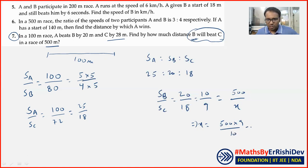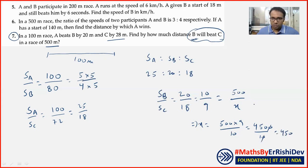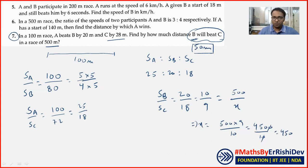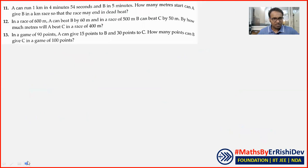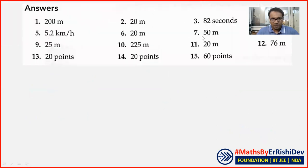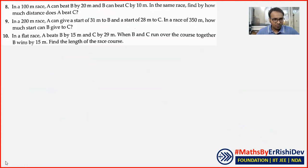x = 500 × 9/10 = 4500/10 = 450۔ یعنی جتنے دیر میں B 500 میٹر بھاگتا ہے، C صرف 450 میٹر بھاگتا ہے — 50 میٹر کم۔ B has won by 50 metres. Check کرتے ہیں — question 7 کا 50 metres ہونا چاہیے — ٹھیک ہے۔